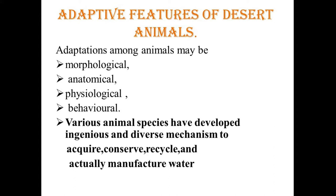Most desert animals have evolved behavioral and physiological mechanisms to solve heat and water problems simultaneously. Among thousands of desert animal species, remarkable behavioral and structural adaptations have developed for avoiding excess heat. Many mammals and reptiles are crepuscular, remaining active only during dusk and dawn. Animals may also develop nocturnal behavior, restricting all activities to the cooler temperatures of the night.